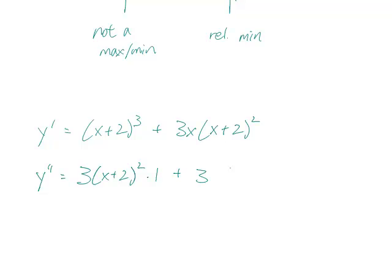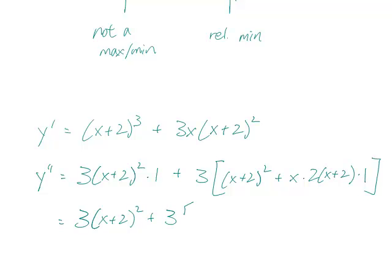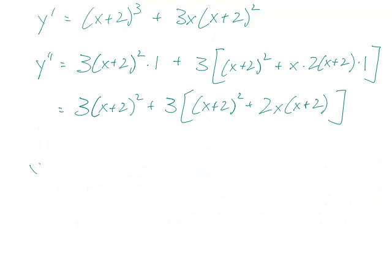And now this is 3 times, I can do the product rule and then append the 3 from the front onto it. Derivative of the first, 1 times x plus 2 squared. Notice that we have x plus 2's in a lot of terms now. Plus the first 1, x times 2x plus 2, the derivative of the second times 1.